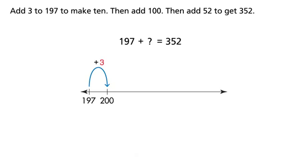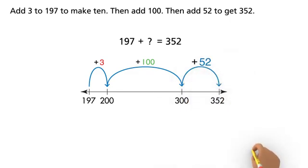Add 3 to 197 to make 200. Then add 100. Then add 52 to get 352. 3 plus 100 plus 52 equals 155.